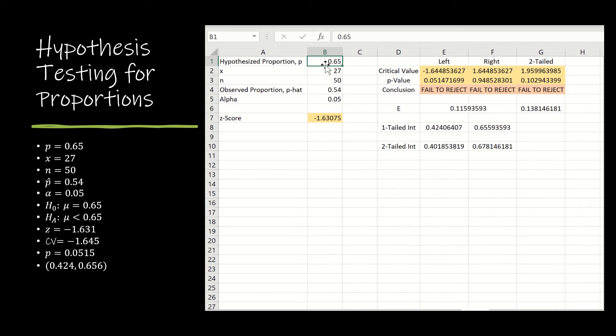I've already entered 0.65, 27 and 50, but I let Excel calculate B2 divided by B3, so x divided by n. Then everything else has been done for me. If we compare those values to the values that we have found by hand, we can see that they are in fact the same.